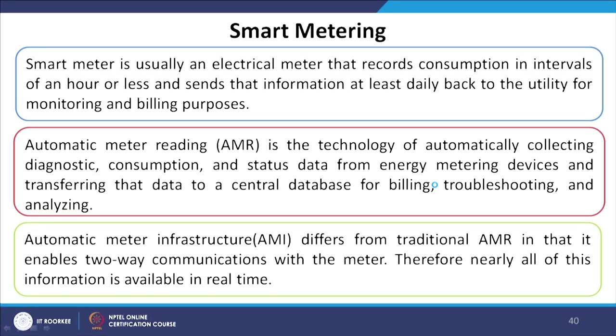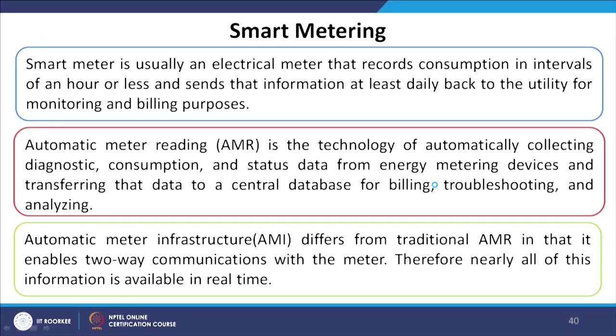Automatic Meter Infrastructure, known as AMI, differs from traditional AMR in that it enables two-way communication with the meters, making nearly all information available in real time. AMR is certainly a helping instrument for smart grid infrastructure, but the AMI does have two-way communication, making nearly all information available to the utility in real time.